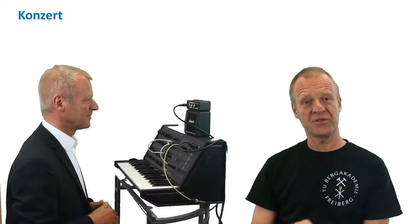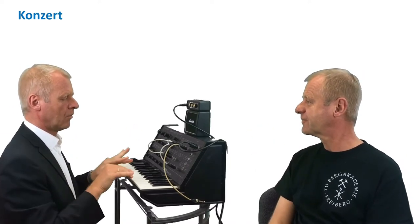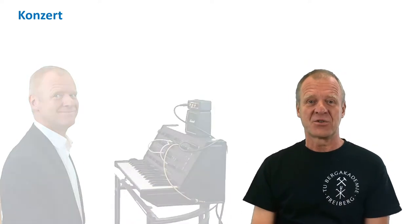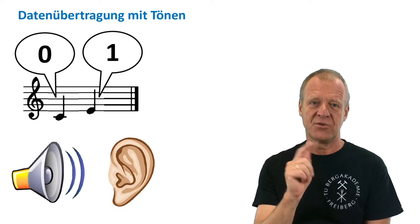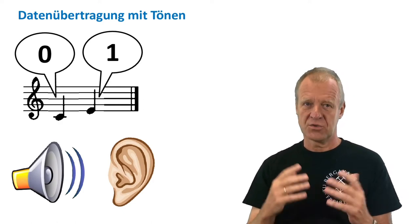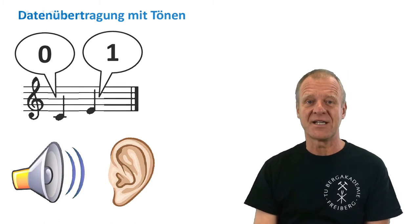But you can also transmit data by music — we will show you how this works. Here I have written down the two notes: one deeper and one higher. Now we can assign one tone to be zero and the other tone to be one. With this assignment, we can use music to transmit data to the surface. This is how a mud siren works.